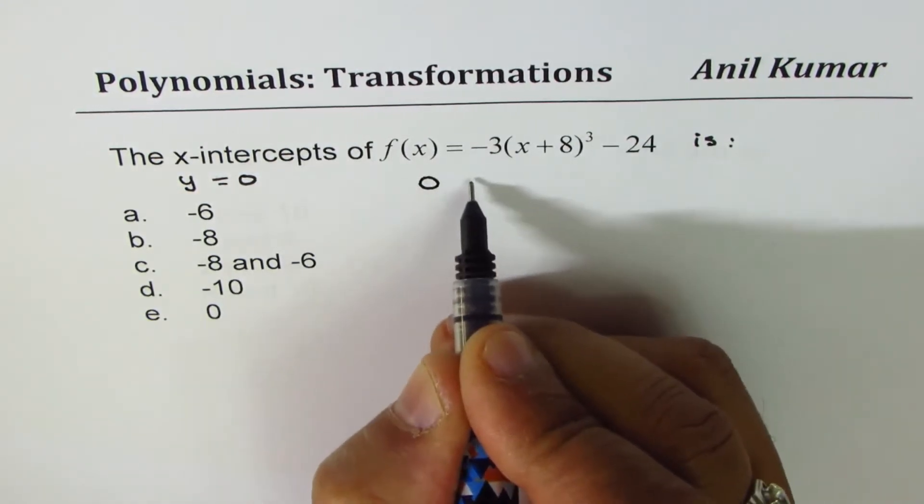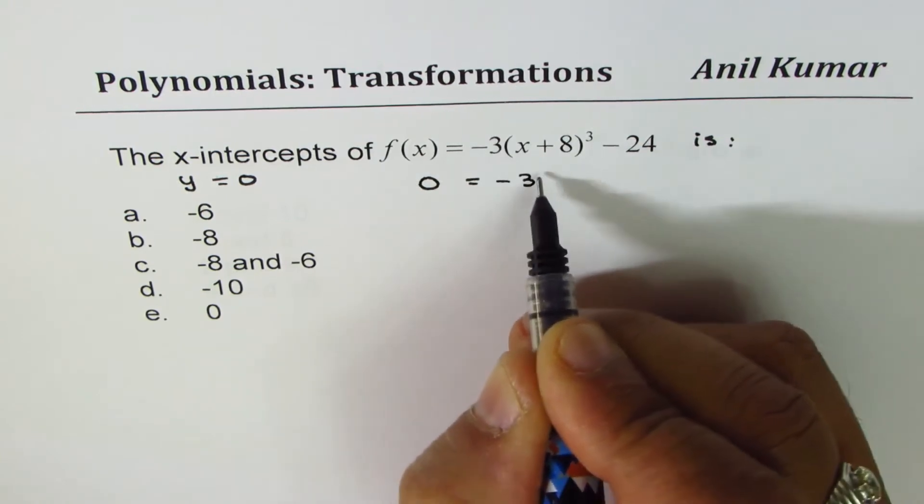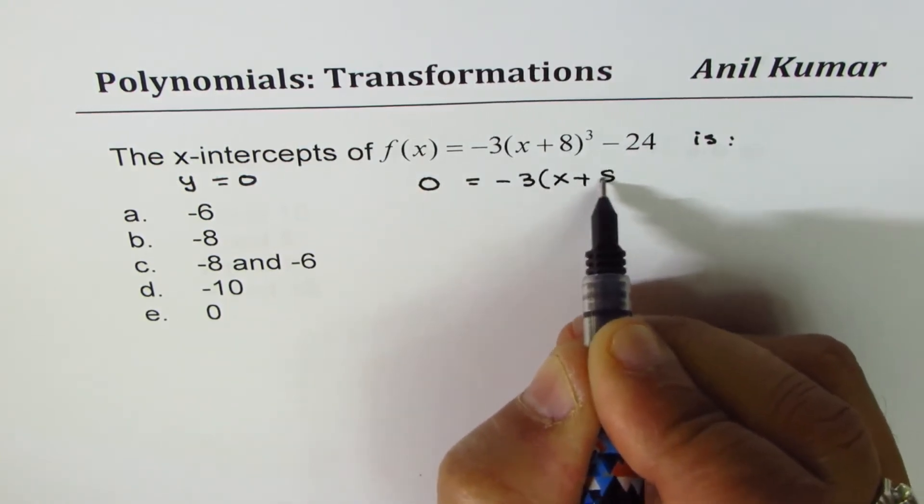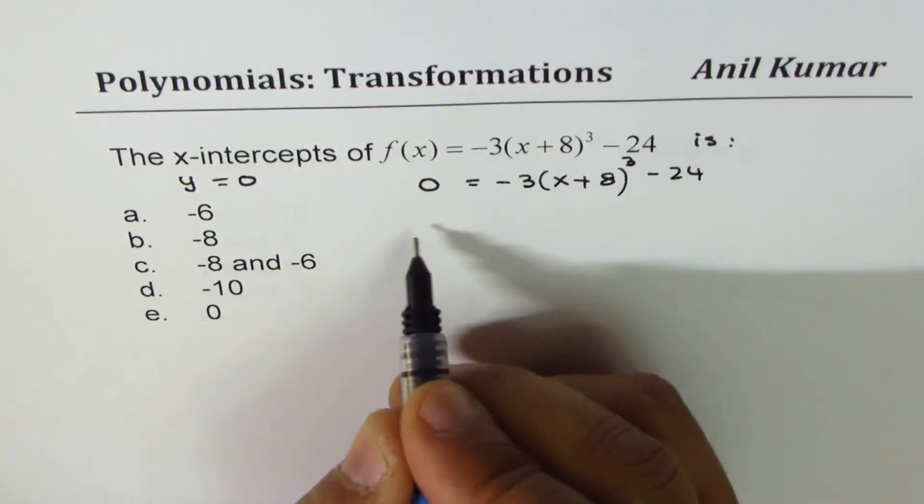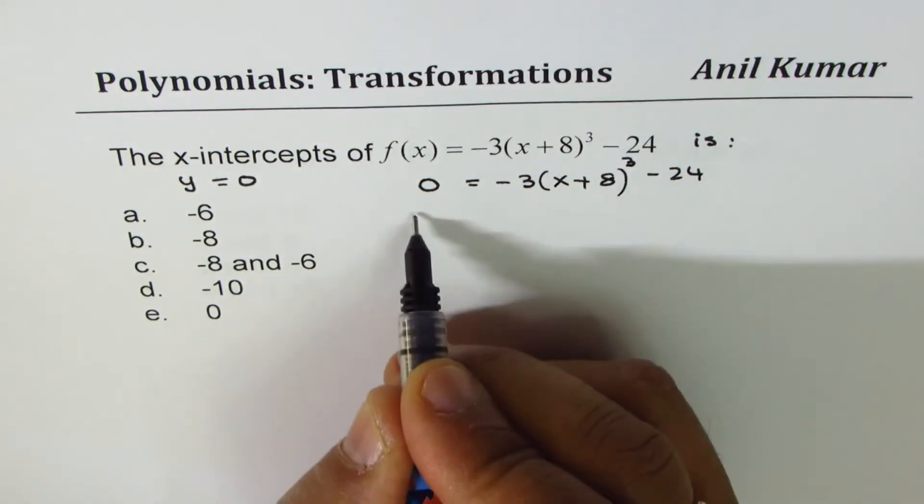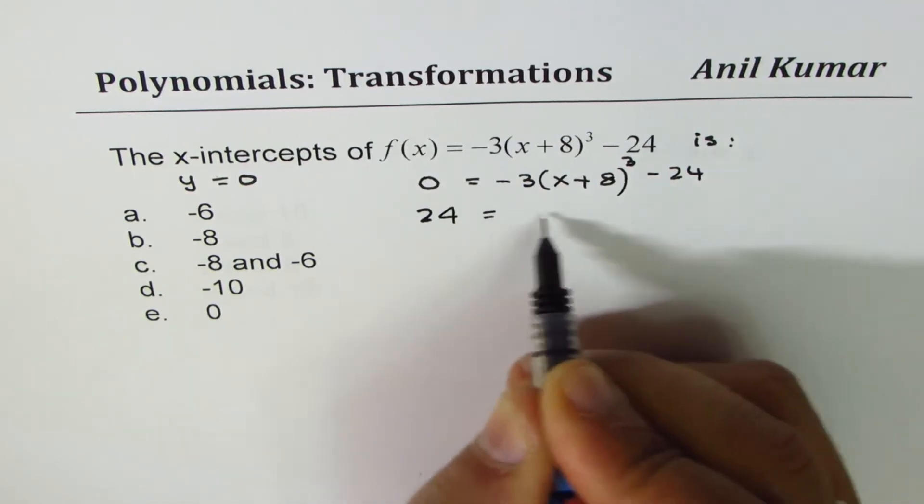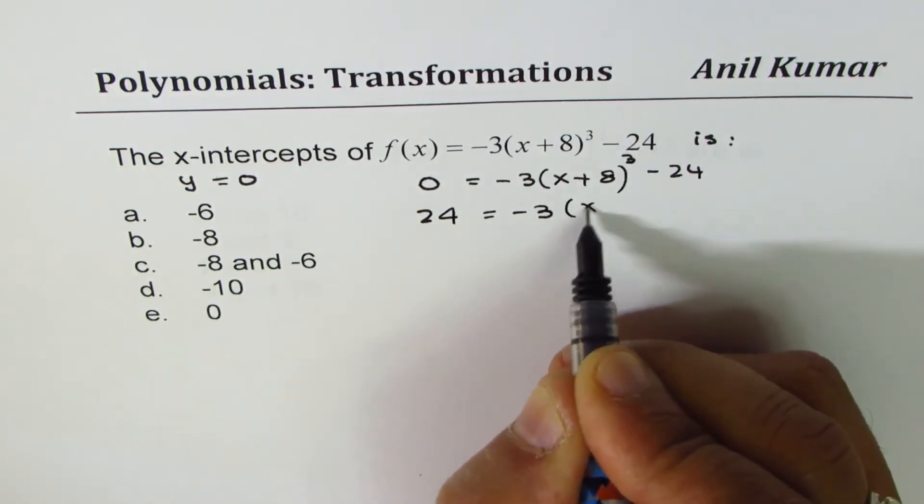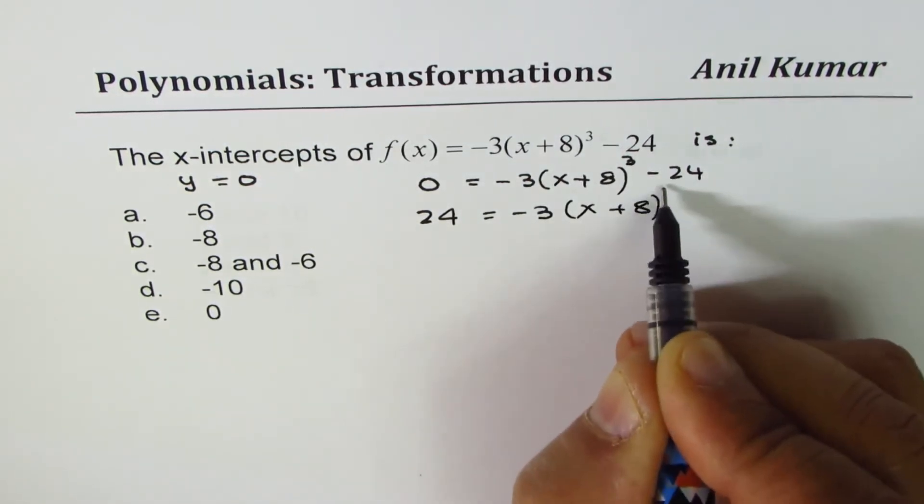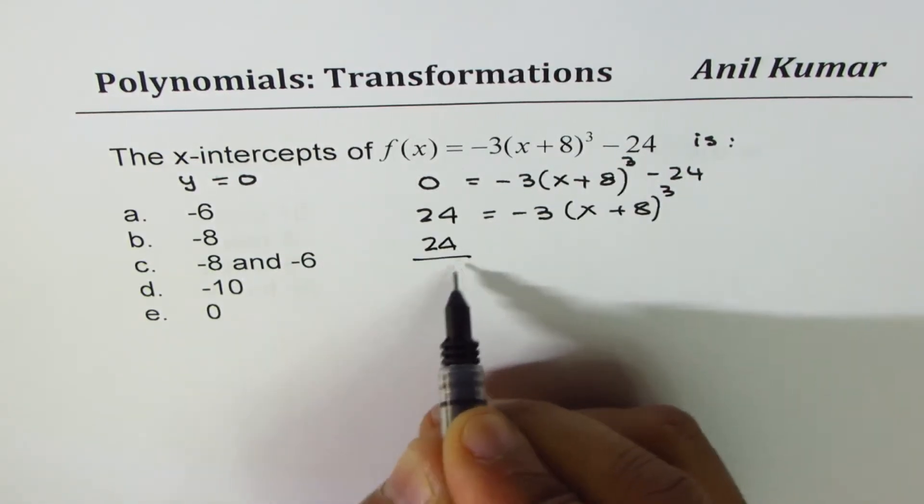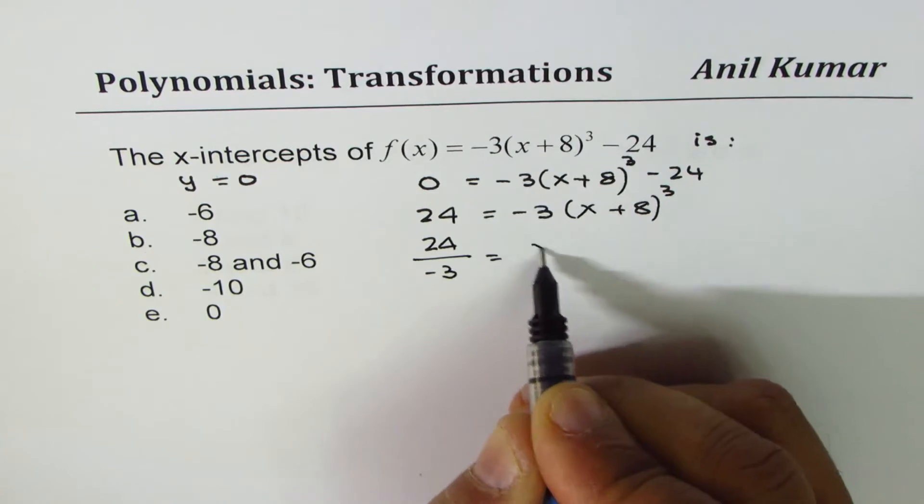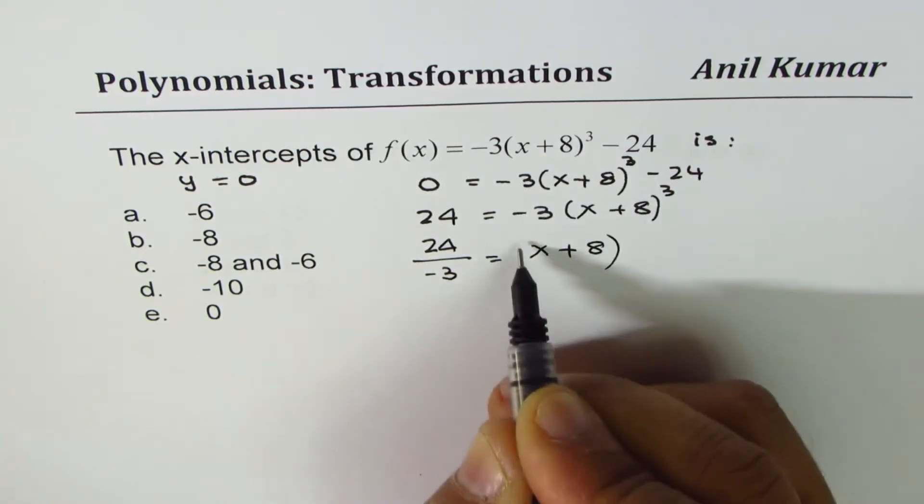So we'll write this as 0 and then we have minus 3 times (x + 8)³ minus 24. Bring 24 to this side or add plus 24 both sides. We get 24 equals to minus 3(x + 8)³. Now divide by minus 3. So we have 24 divided by minus 3 equals to (x + 8)³.